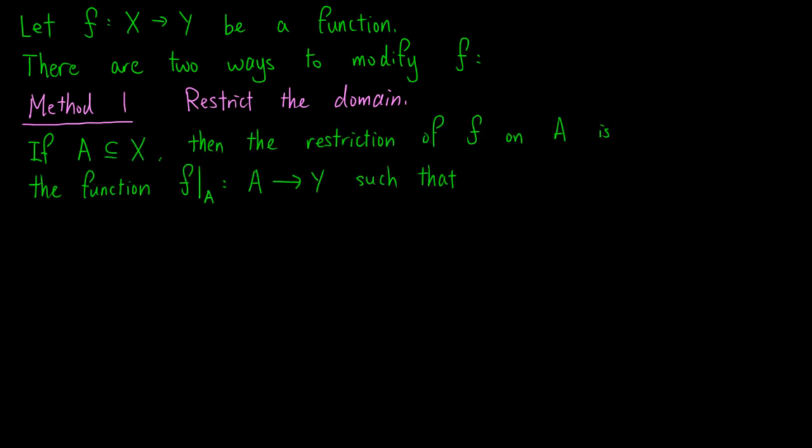then the restriction of f on a is the function denoted by f vertical line a from a to y such that f restricted to a of a equals f of a for all elements a in the set a.